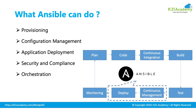Orchestration — it takes care of multiple agents and multiple nodes. And it can help you to plan, code, continuous integration, build, test, monitor, deploy and a lot of things. Ansible mainly plays into your deployment area as part of your CI/CD pipeline.